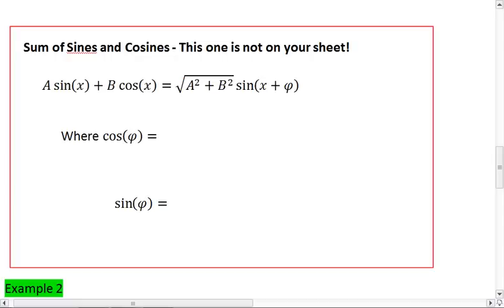The formula tells us that if we have sine and cosine of the same angle, but with coefficients out front, we can solve for what that value equals in terms of just a sine function.